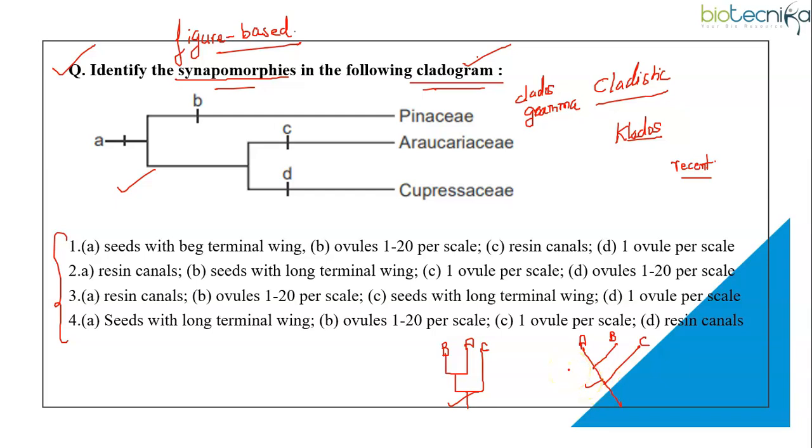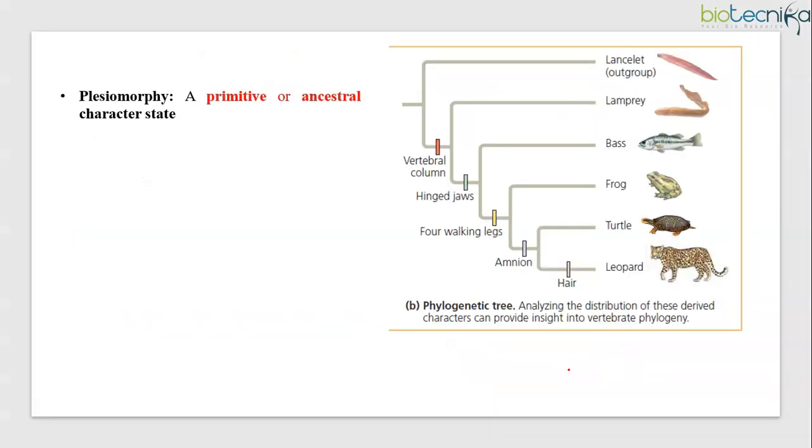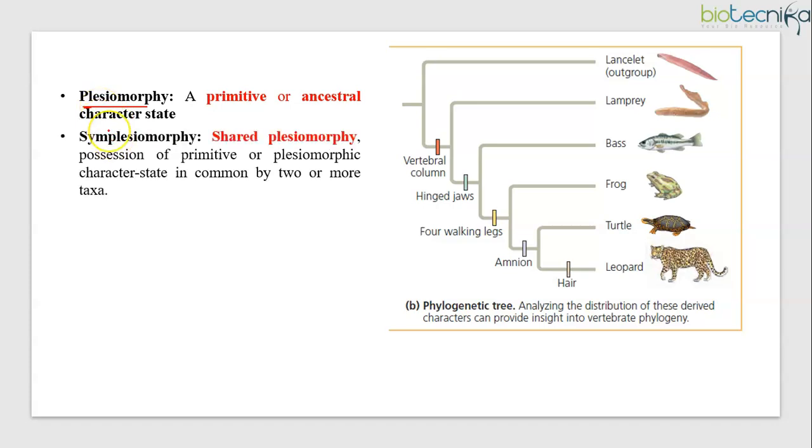Cladogram uses lines that branch off in different directions ending at a clade, a group of organisms with a last common ancestor. When we talk about the terms like synapomorphies or plesiomorphy, plesiomorphy means a primitive or ancestral character state. A shared plesiomorphy is called as symplesiomorphy. For example, as you can see here in this phylogenetic tree, all mammals have the backbone. Lamprey, bass, frog, turtle, leopard, they all have vertebral column. But a backbone does not distinguish mammals from other vertebrates because all the vertebrates have backbone. Thus, for mammals, the backbone is a shared ancestral character, a character that originated in an ancestor of the taxon.